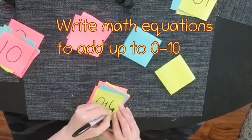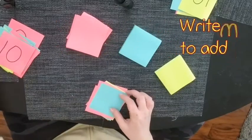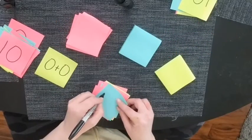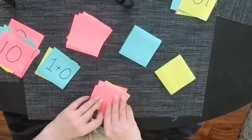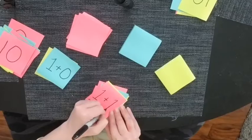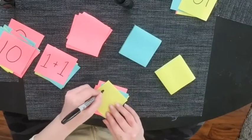Next you're going to write simple math equations that add up to each number. So 0 plus 0 adds up to 0 and so on. Try not to make it so simple as 2 plus 1 or 5 plus 1. Think of different ways that you can make a number.